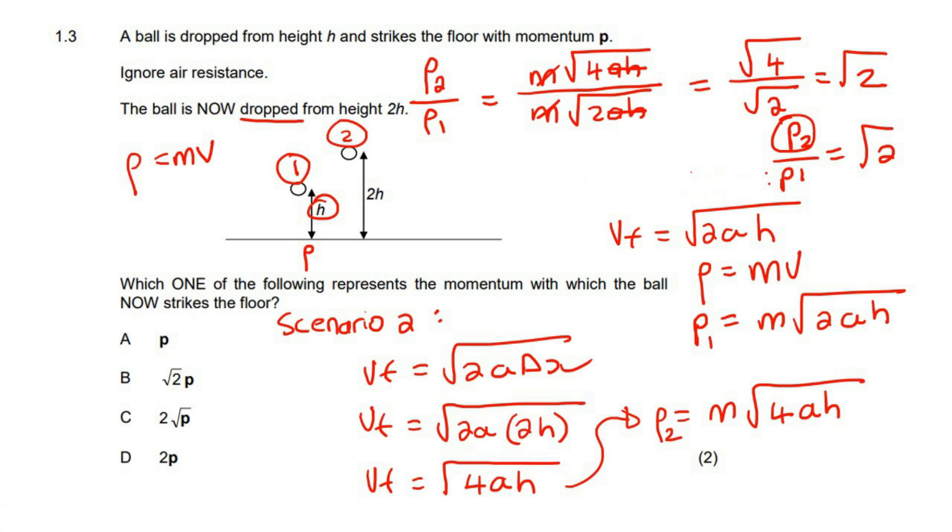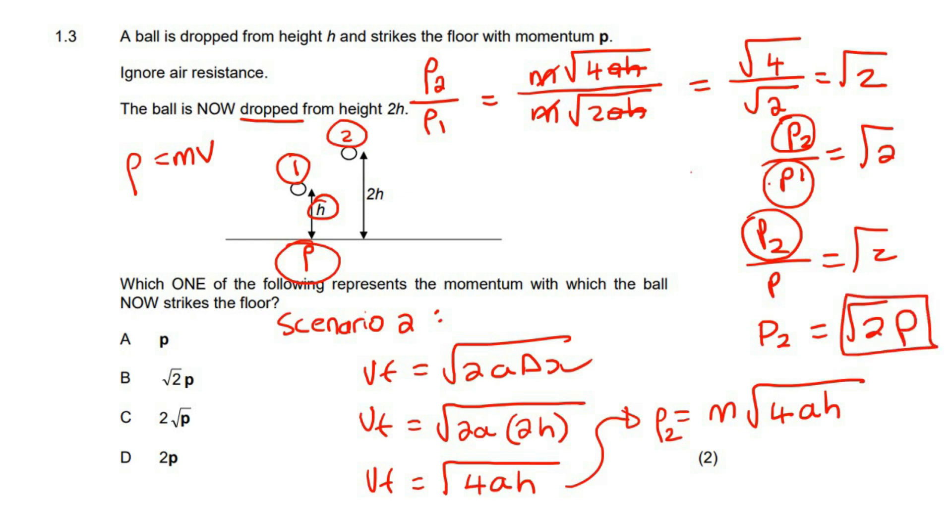If you're still feeling a bit unsure about that last part, then what we can do now is you can replace p1, which was this momentum, with p. So we can go p2 over p. Then to get p2 by itself, you can take that little p to the other side, and there we go. And so p2 is going to be square root 2 times p, and so the answer is b.